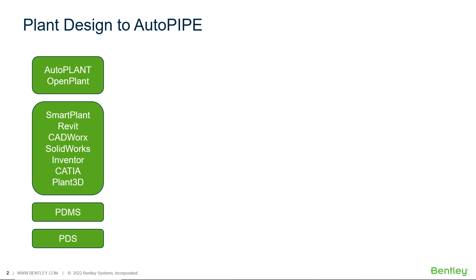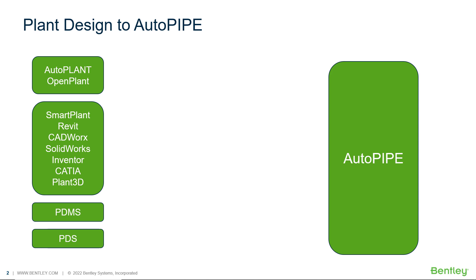For pipe stress analysis, our goal is to get this model into AutoPipe, where the pipe stress engineers can import the geometry, define any additional mechanical characteristics of the piping elements, and add loadings, and then run a stress analysis, review the results, and make any required changes.